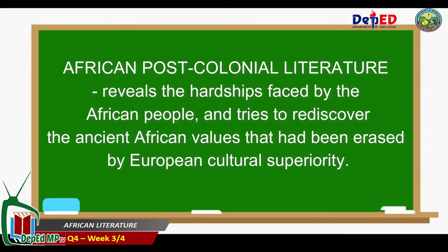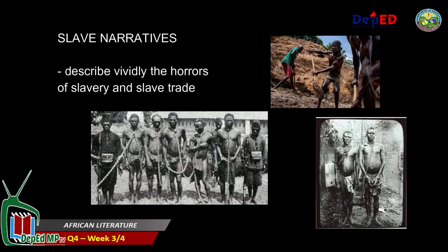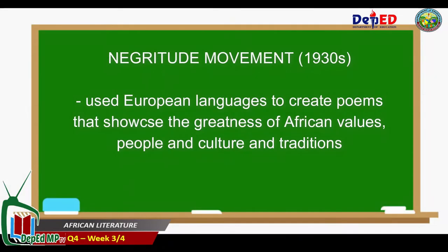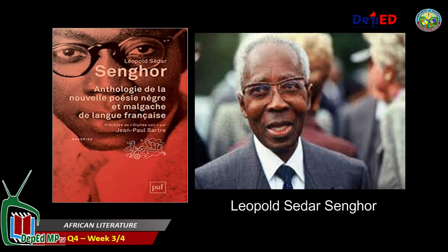African post-colonial literature therefore reveals the hardships faced by the African people and tries to rediscover the ancient African values that had been erased by European cultural superiority. In the 1930s, the Negritude Movement was born — a literary revolution initiated by African intellectuals from French colonies. The Negritude Movement paved the way for writings that dealt with reactions against colonial repression and against white perceptions of Africa and its people. Popular in this period were slave narratives which described vividly the horrors of slavery. Negritude also used European languages to create poems showcasing the greatness of African values, people, and culture — for example, Leopold Sédar Senghor's poetry collections in French.